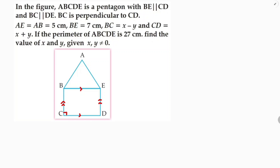AE is 5 centimeters, AB is 5 centimeters, and BE is 7 centimeters. So CD will also be 7 centimeters. BC is x minus y, and CD they told is x plus y, so x plus y equals 7 — that's the first equation.